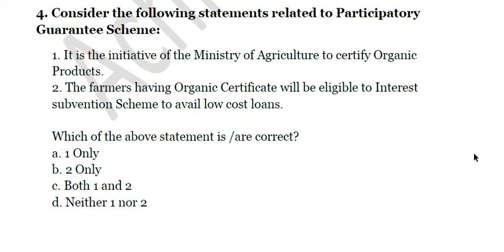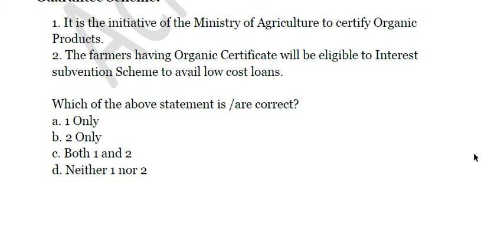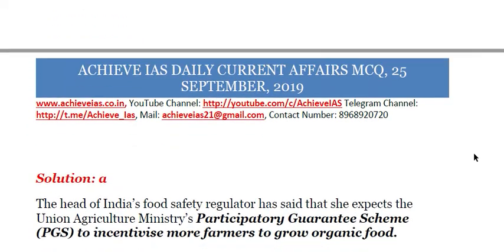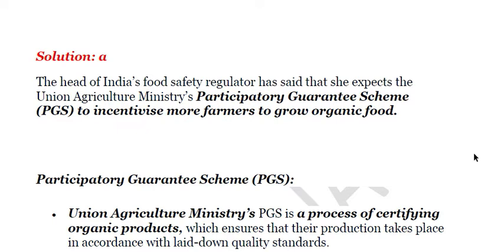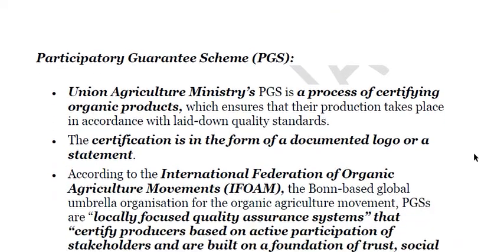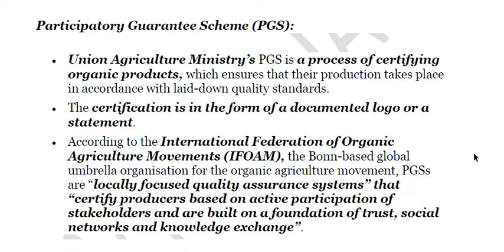Question four: consider the following statements related to the Participatory Guarantee Scheme. First, it is an initiative of the Ministry of Agriculture to certify organic products. Second, farmers having an organic certificate will be eligible for the interest subvention scheme to avail low-cost loans. Which statement is correct? Only the first statement is correct. The PGS is a government of India scheme implemented by the Union Ministry of Agriculture and Farmer Welfare. It is a process of certifying organic products, ensuring that their production takes place in accordance with laid-down quality standards.